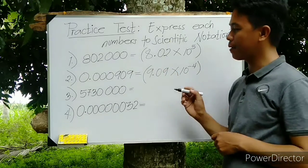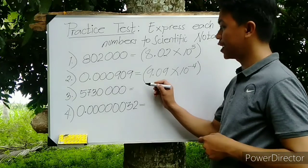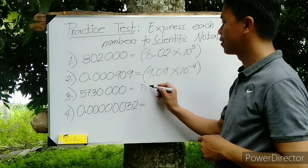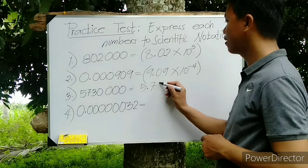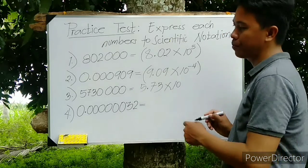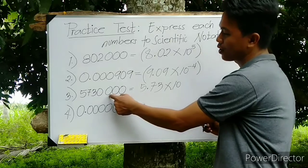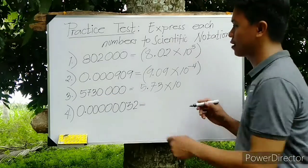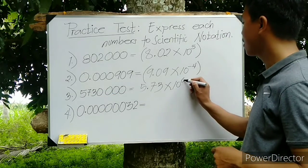For number 3, the answer for that is 5.73 times 10 to the power of 1, 2, 3, 4, 5, 6—positive 6.